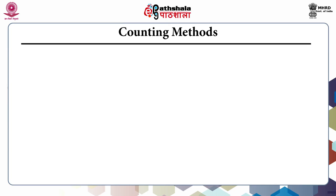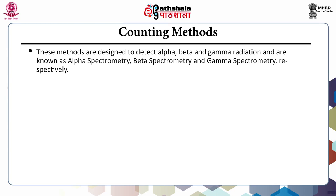Counting methods are designed to detect alpha, beta, and gamma radiations. When decay of radionuclides takes place, energy is emitted in the form of alpha, beta, or gamma radiation. These techniques are known as alpha spectrometry, beta spectrometry, and gamma spectrometry respectively.